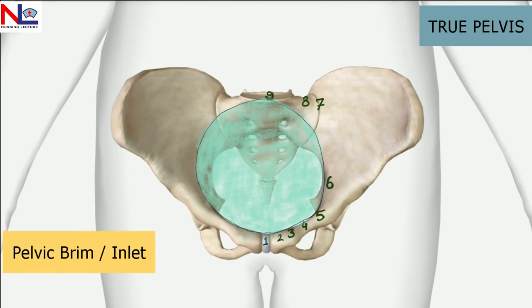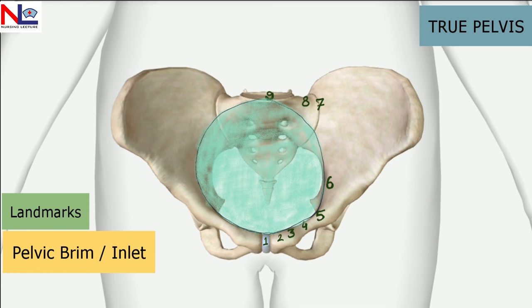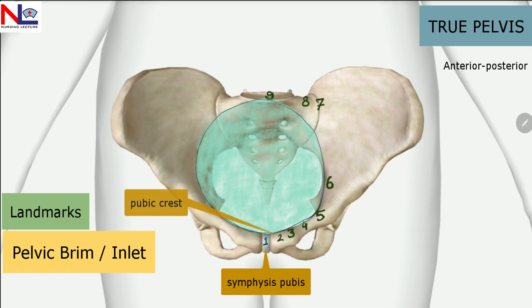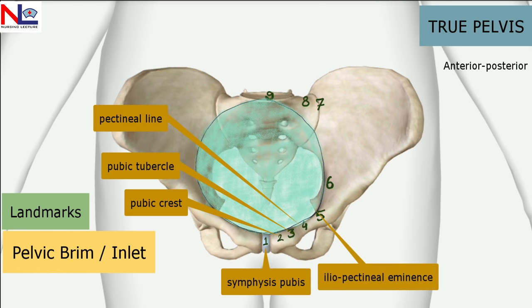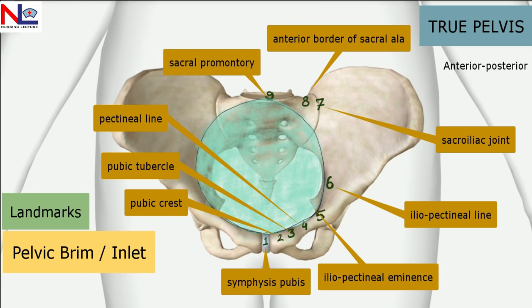The pelvic brim or inlet forms a round circumference with various bony fixed points — landmarks through which the fetus comes in contact with the maternal pelvis at the time of engagement. Listed anterior to posterior, the nine landmarks are: symphysis pubis, pubic crest, pubic tubercle, pectinal line, iliopectinal line, sacroiliac joint, the anterior border of the ala of sacrum, and the sacral promontory.